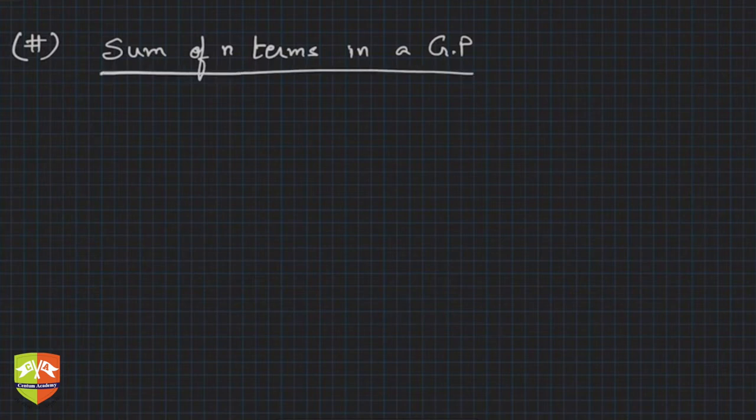Now you remember how did we find sum of n terms in an AP? Reverse and add, right? How should we find out sum of n terms in a GP? Will reversing help? In this case reversing will not help.